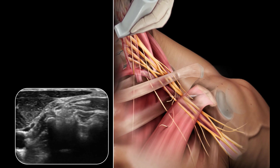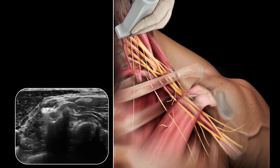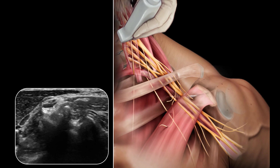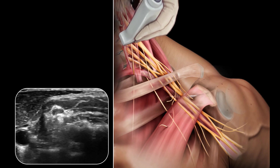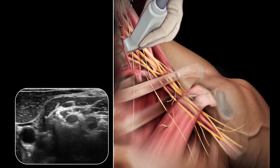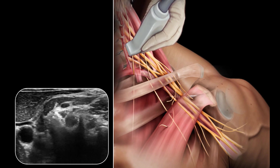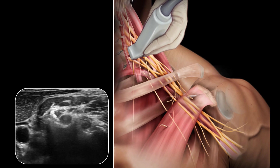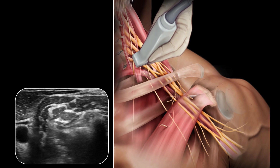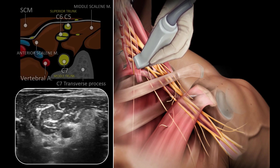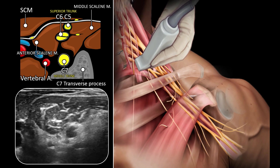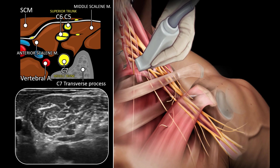Another way to determine the cervical spinal level is by following the vertebral artery, which runs anteriorly at the C7 level before it enters the foramen of the C6 transverse process in about 90% of cases — however, it enters at C5 or higher in about 10% of cases. The goal is to identify the anterior and middle scalene muscles and the elements of the brachial plexus located between them.